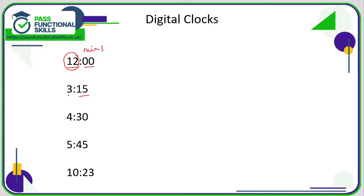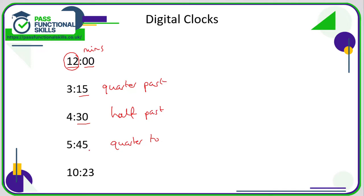Here we've got 15 minutes after three, so 3:15 — and 15 minutes past three is otherwise known as quarter past. So when it's 15, that is quarter past. If it's 30, we've got half past, so 4:30 is half past four. When it's 45, we say quarter to — so 4:45 is quarter to six. And when it's a random number, we just read it as is, like 10:23 — nice and easy.